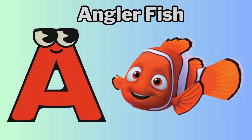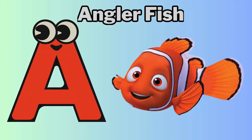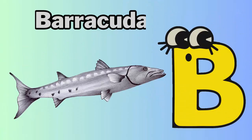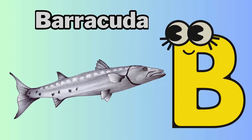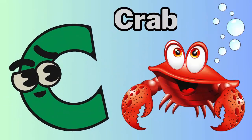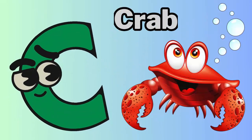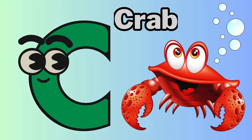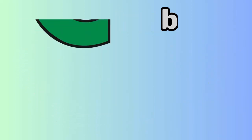A is for anglerfish. Ah, anglerfish. B is for barracuda. Buh, barracuda. C is for crab. Kuh, crab.